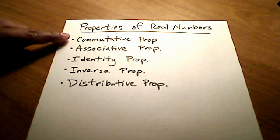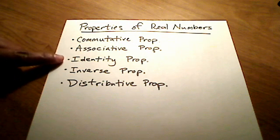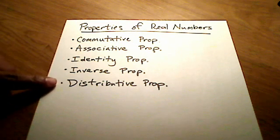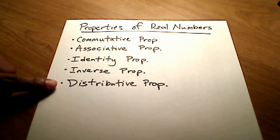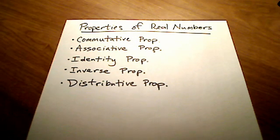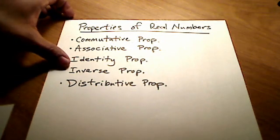We have the commutative property, the associative property, the identity property, the inverse property, and I think the most important of them all is this last one because it's used in a lot of higher math classes, the distributive property. So let me just take a quick second and show you how each of these properties work.